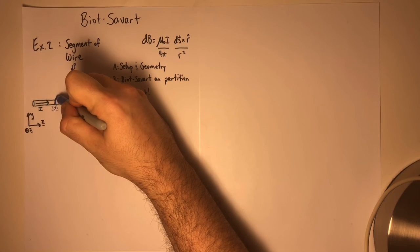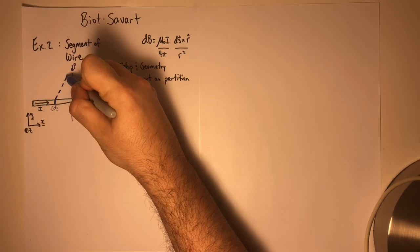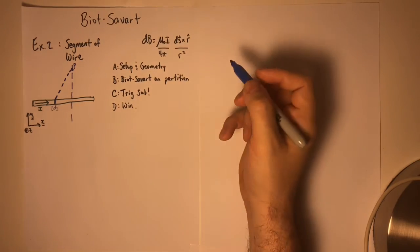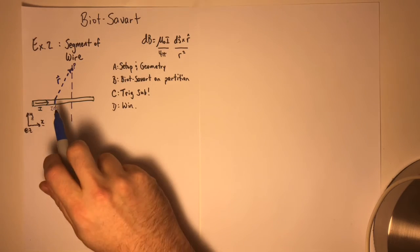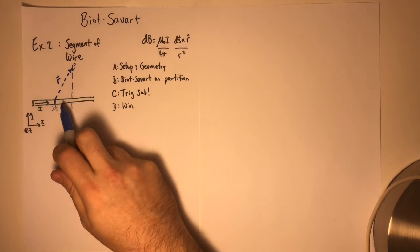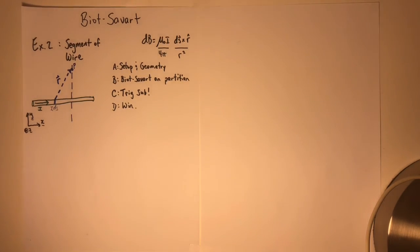So this is our R vector that points from the current element partition to our point of interest P. We'll draw that later just because it's important to look at some of the angles and the relationships with X and Y.